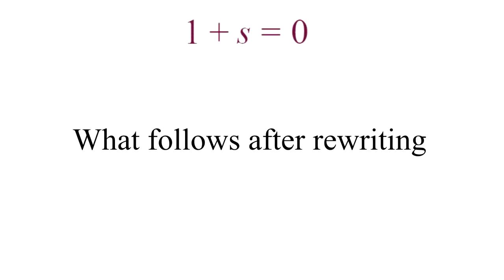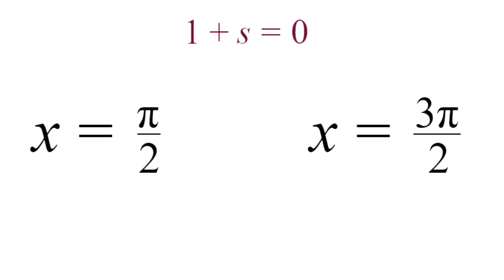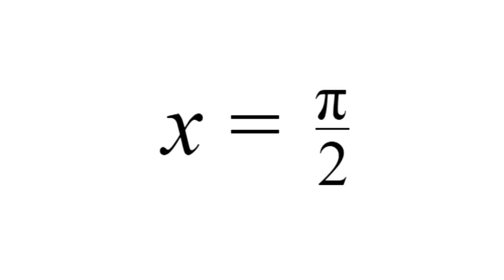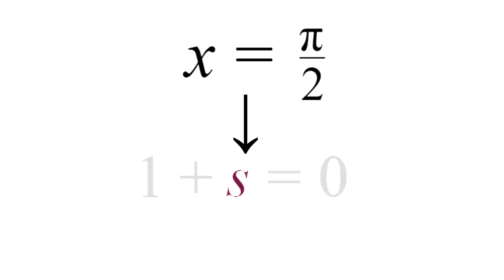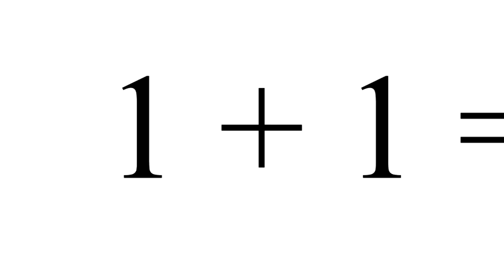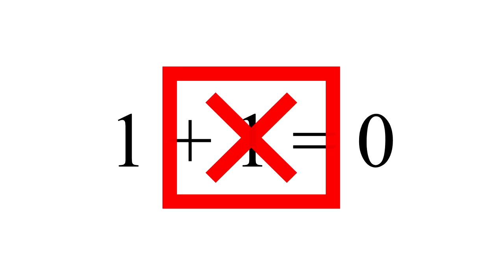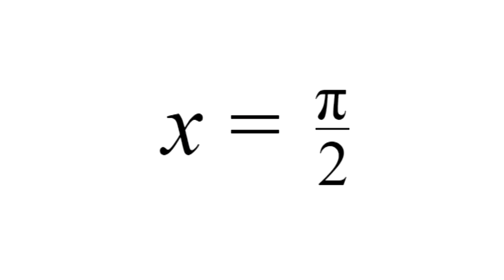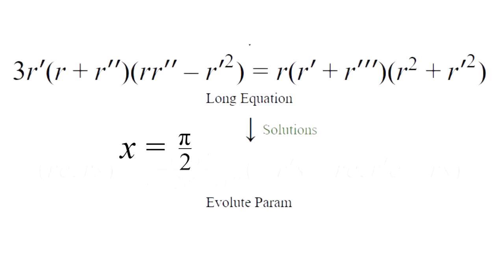What follows after rewriting is that we plug our solutions of pi over 2 and 3 pi over 2 to that equation. Let's try pi over 2 first. If we plug in pi over 2 to this s right here, our equation turns to 1 plus 1 equals 0. Obviously this equation here is not true, and because it is not true, the solution pi over 2 is not extraneous, meaning this solution exists and is free to move on to step 3.